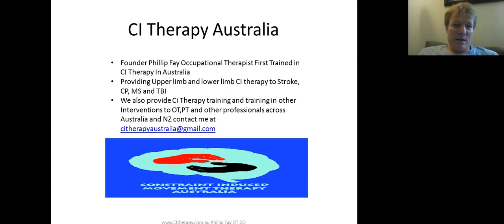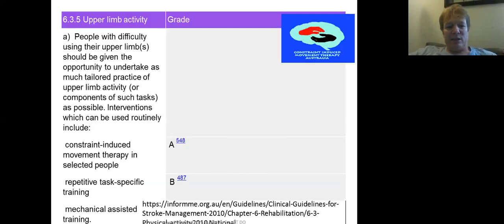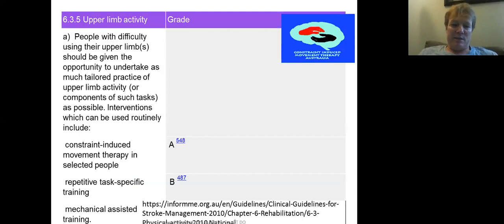The 2010 guideline shows constraint use therapy is Category A evidence. Interestingly, task specific training is Category B evidence; however, task specific training is actually part of the CI therapy intervention.